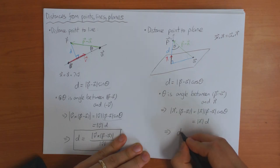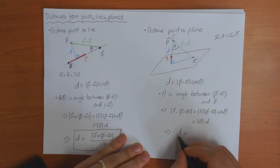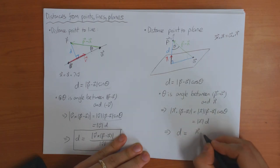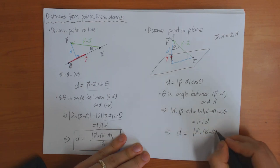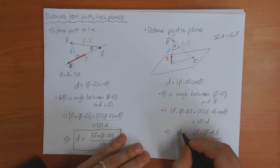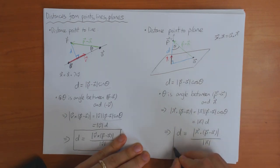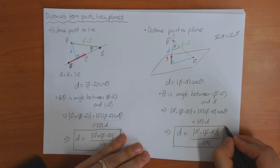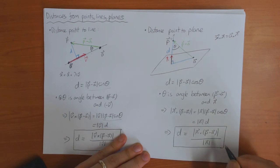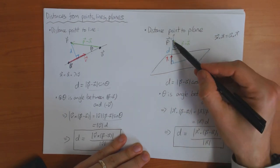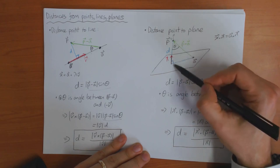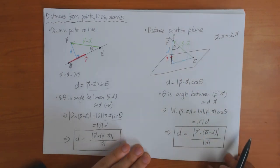Rearranging, you get the formula: D = [N · (P − A)] / |N|. So again, if you know the equation for the plane in terms of its normal vector, you can work out the distance from any point to the plane using this formula.